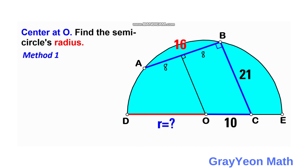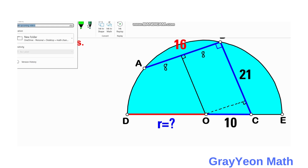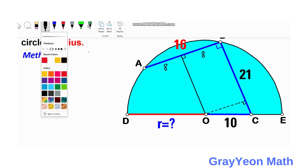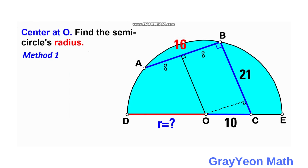Next, we draw a line from the center of the blue semi-circle to the 21-unit segment BC, and it should be perpendicular. Since one side is perpendicular, this other side is also perpendicular.